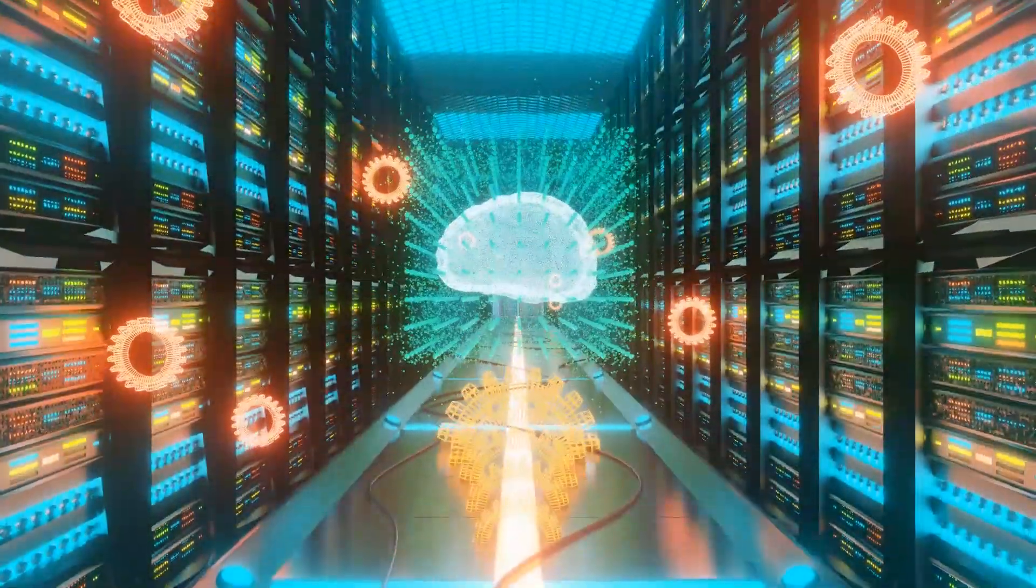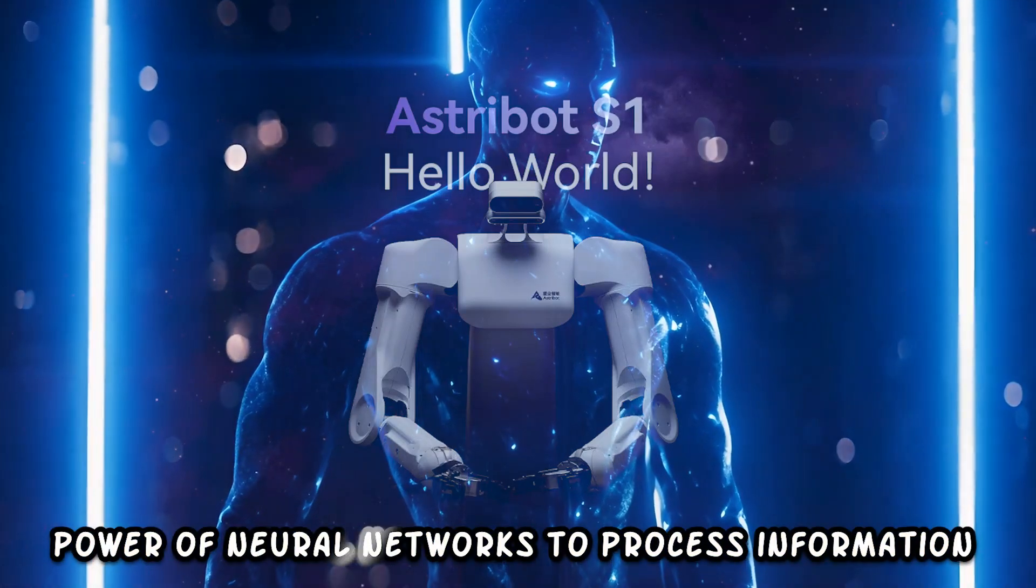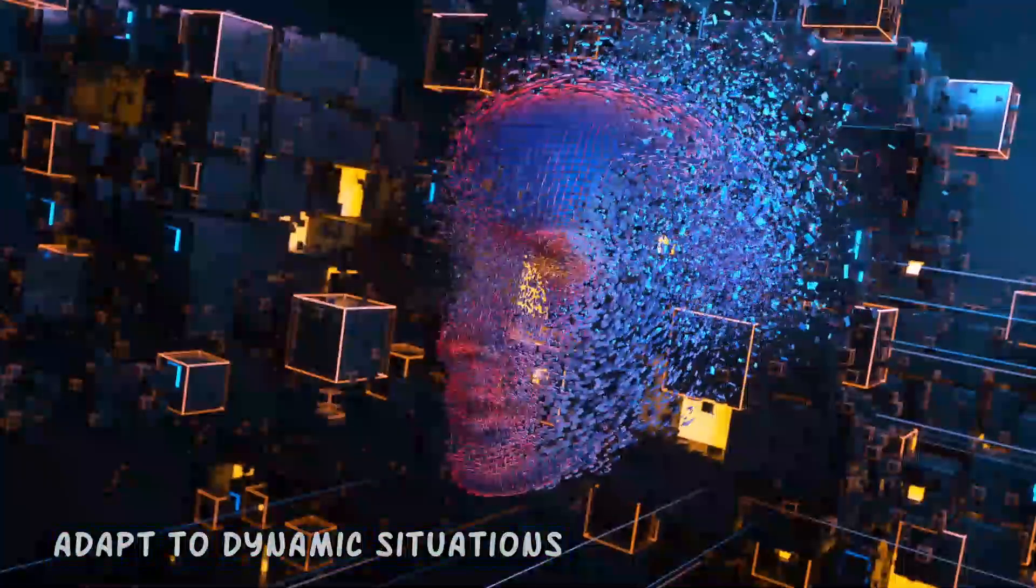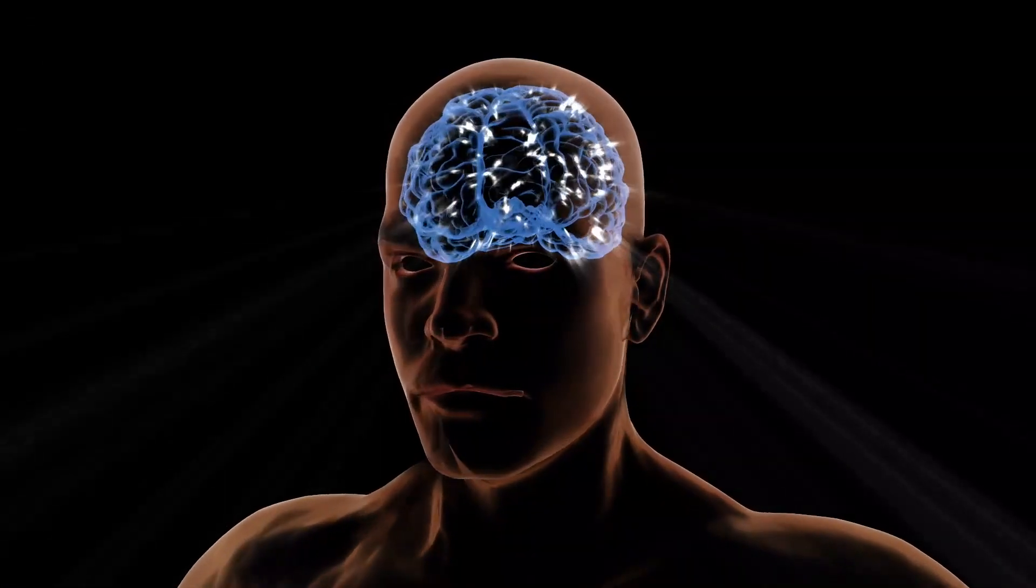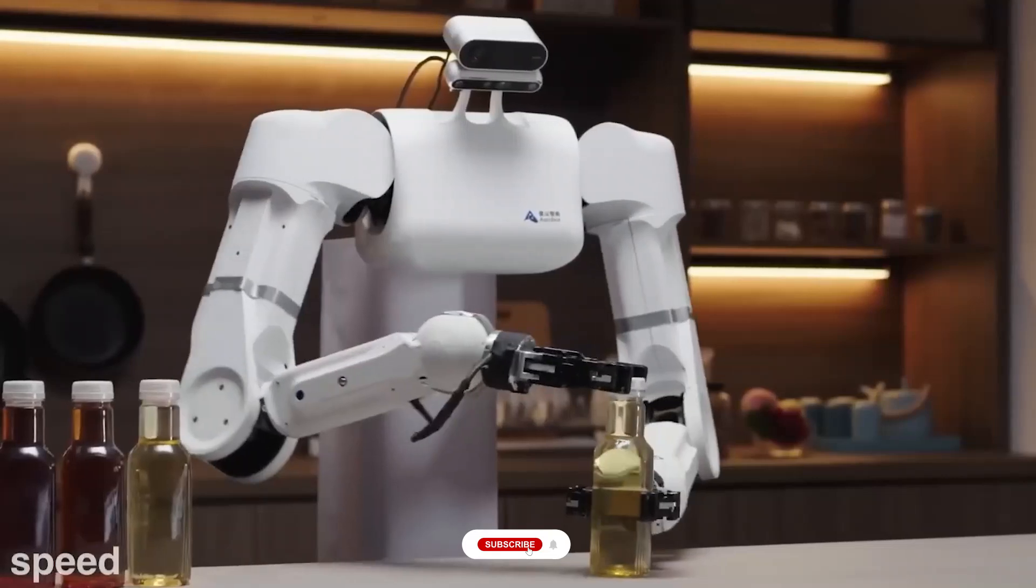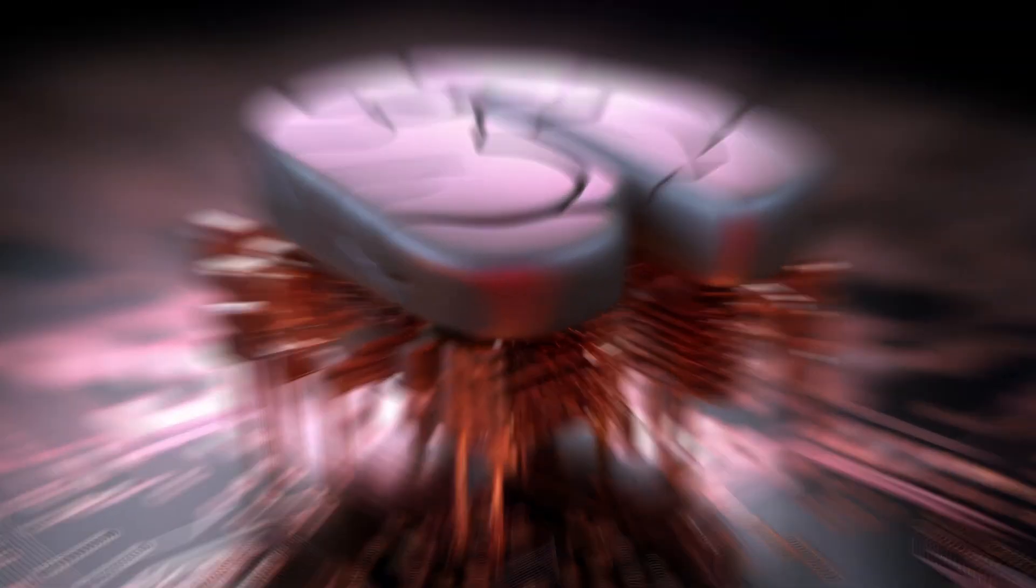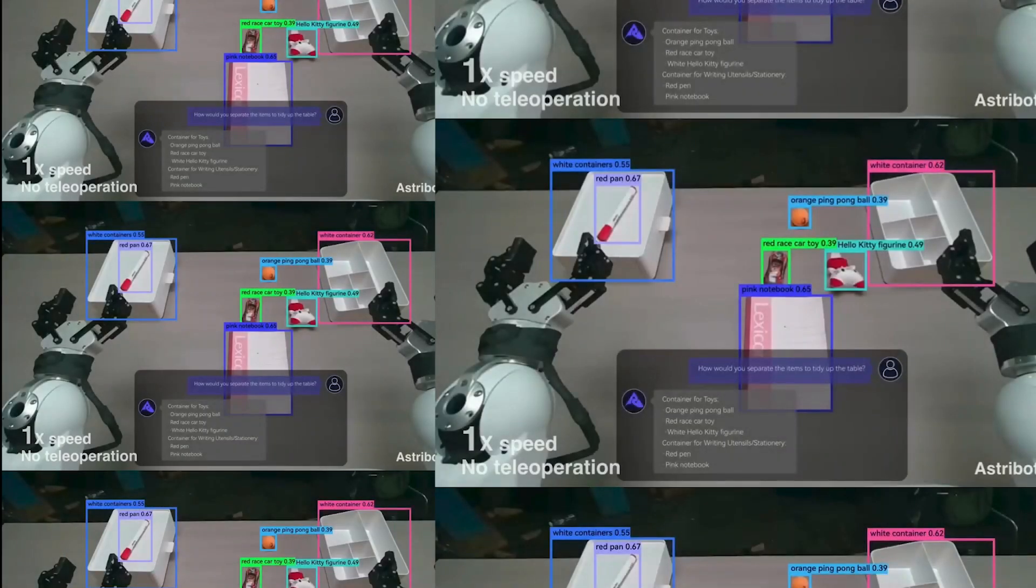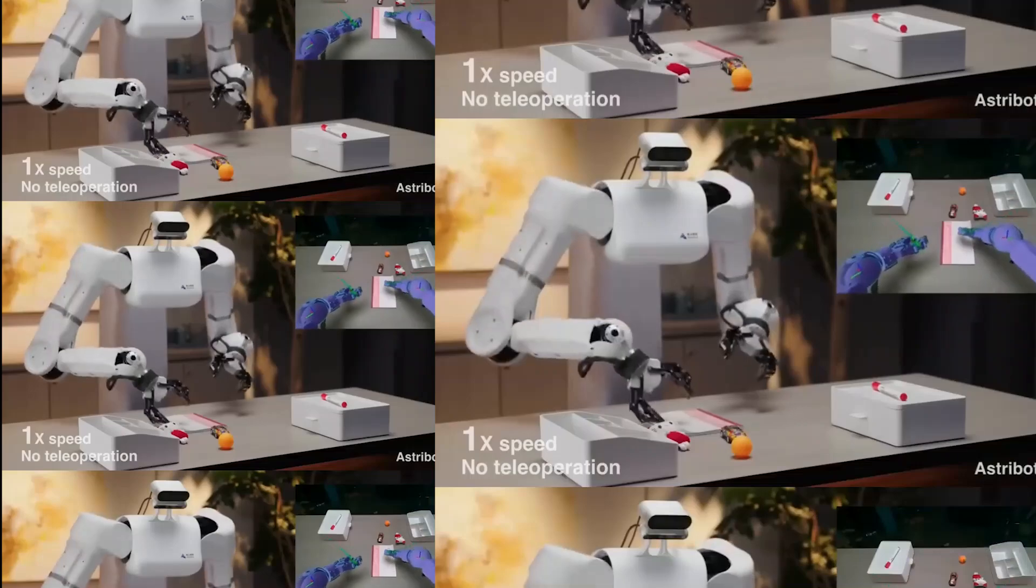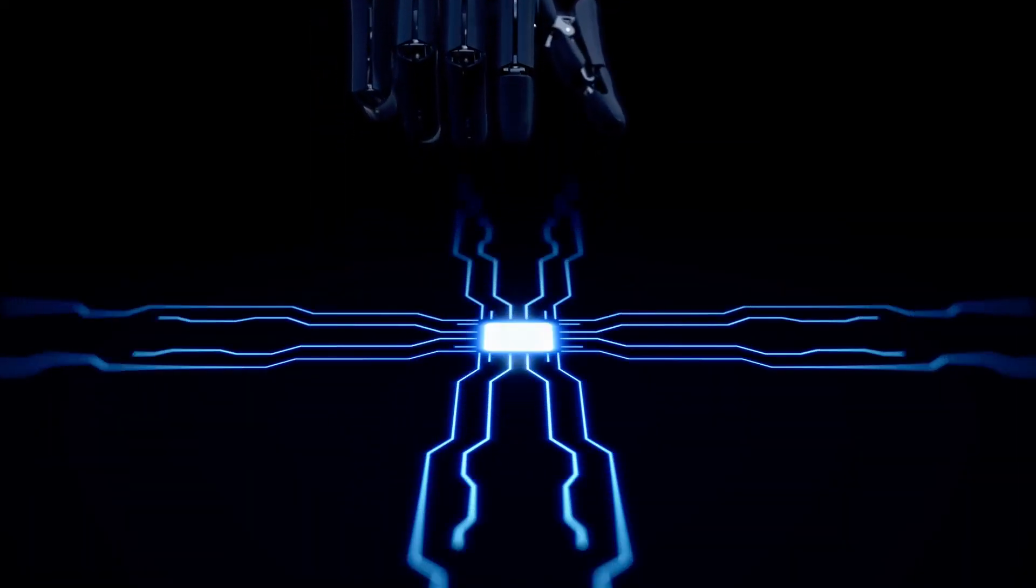Coupled with its sensory capabilities, Astrobot S1 harnesses the power of neural networks to process information and adapt to dynamic situations. These neural networks, modeled after the human brain, enable Astrobot to learn from its experiences, continually improving its performance and problem-solving abilities over time. As a result, Astrobot excels in navigating complex environments, effortlessly adjusting its actions to suit the task at hand.